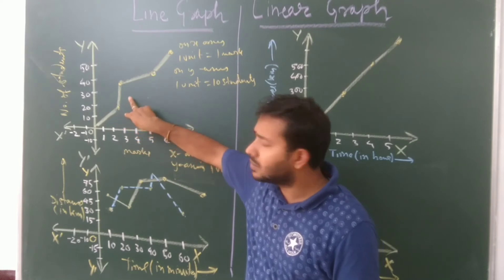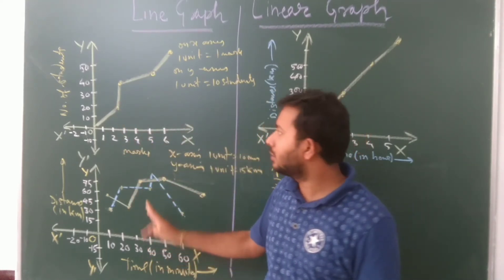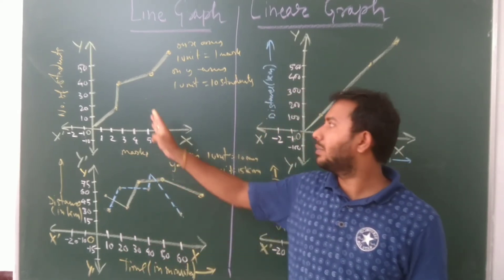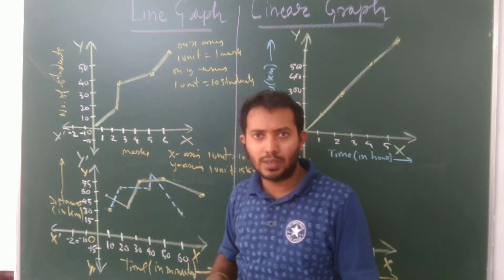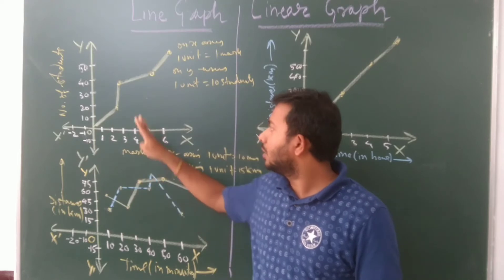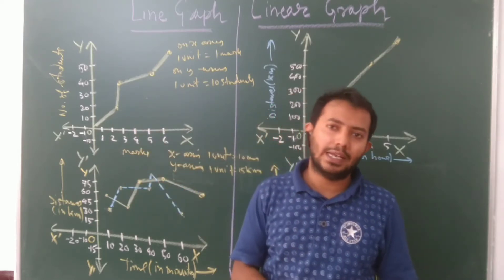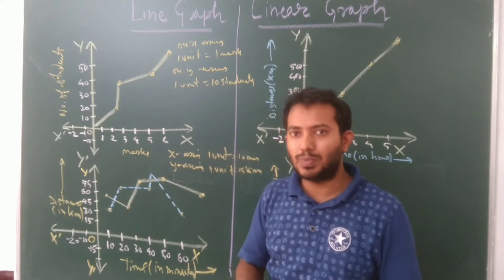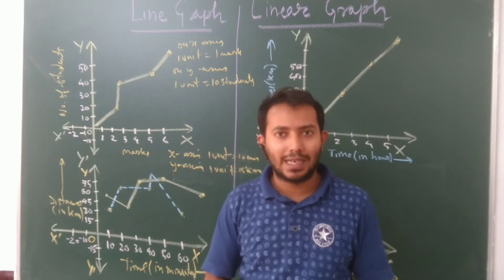Here is a single line graph and here is a double line graph. Whenever we track a single student's marks, speed, or height, we use a single line graph. But if we need to compare two students' marks, speed, distance, or time, then we use a double line graph.